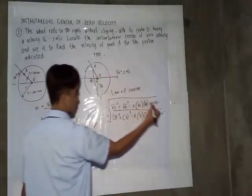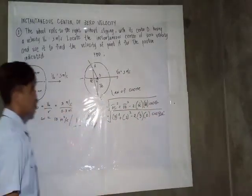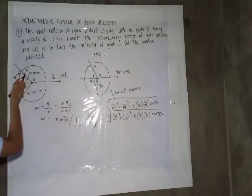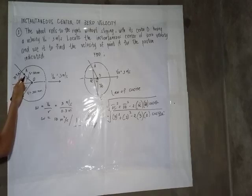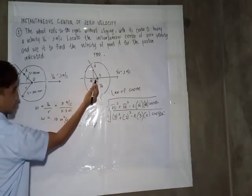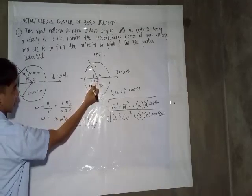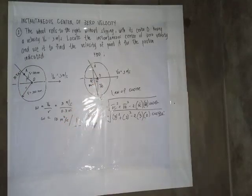So if you're wondering where we got the 120 degrees, we have here 30 degrees, and we have here which is 90 degrees, so we can get the 120 degrees.